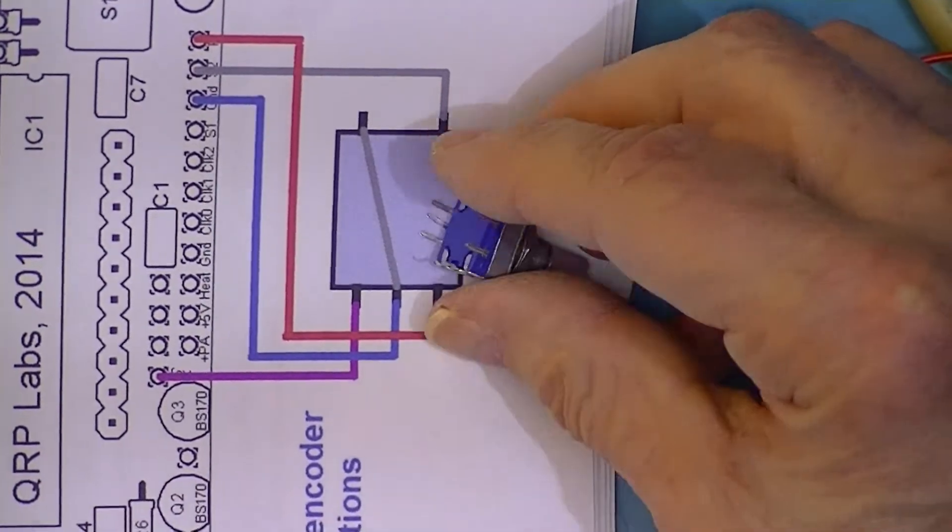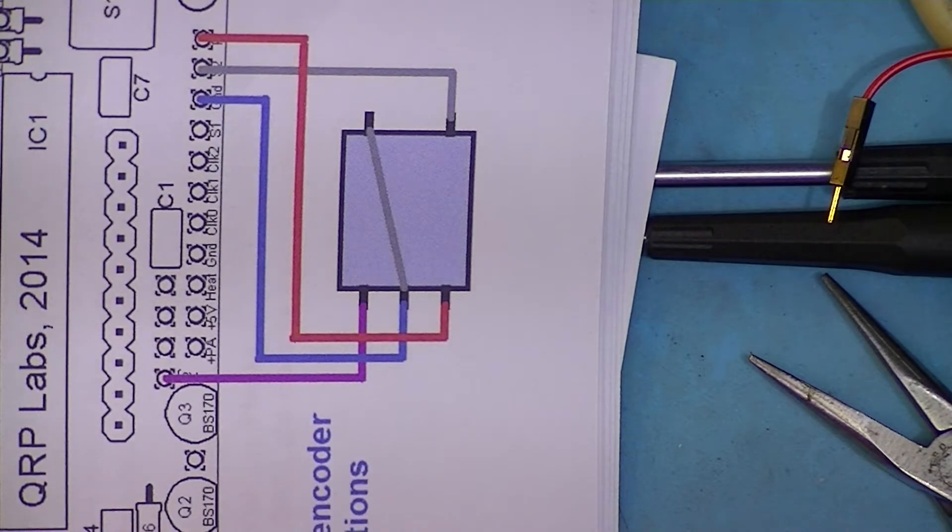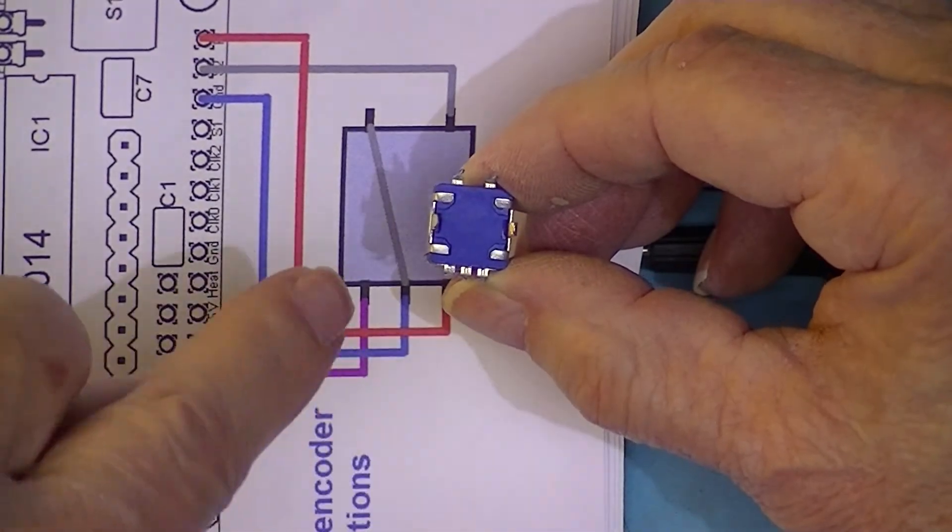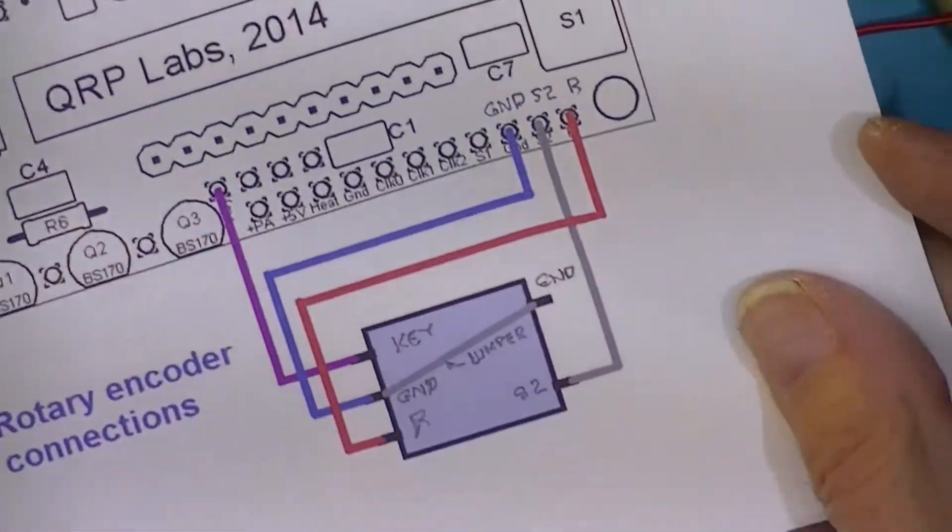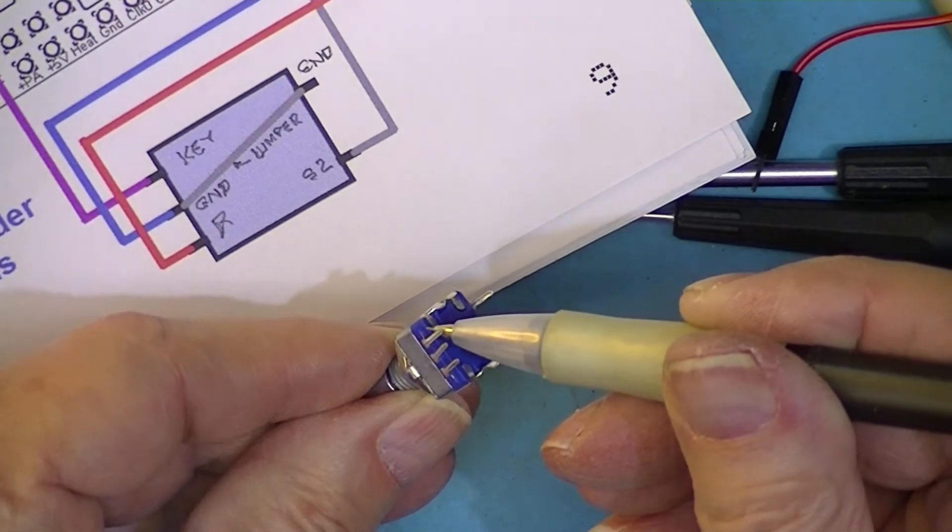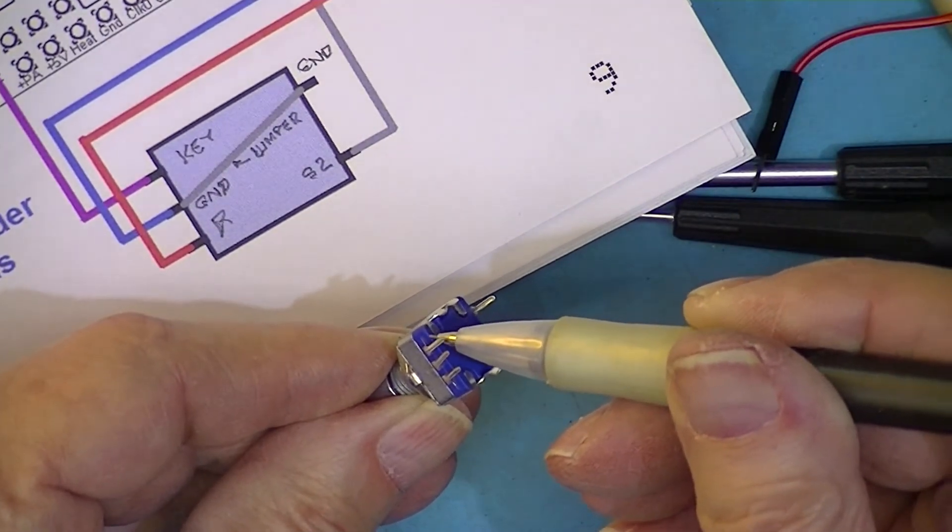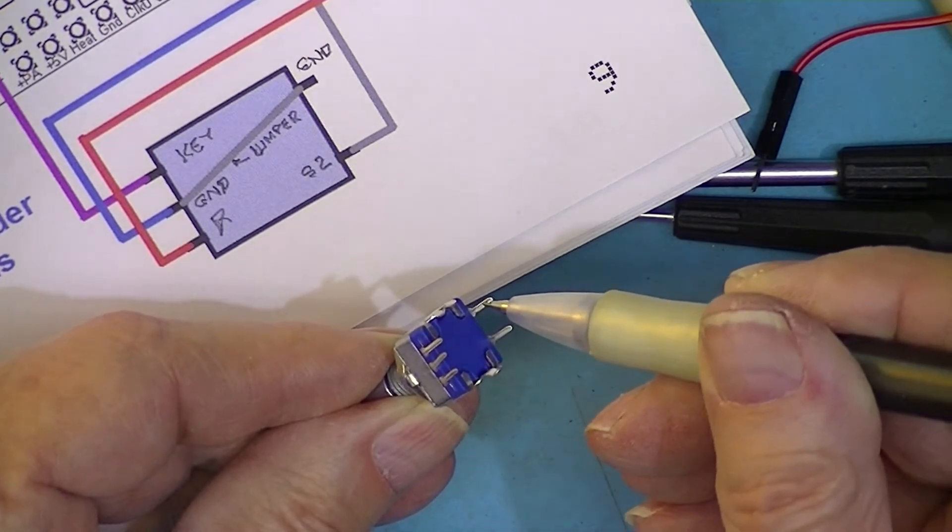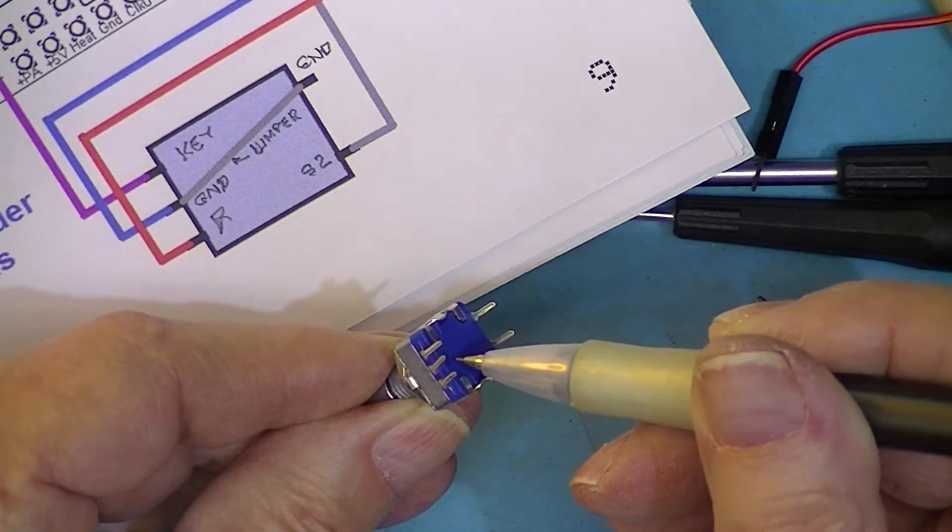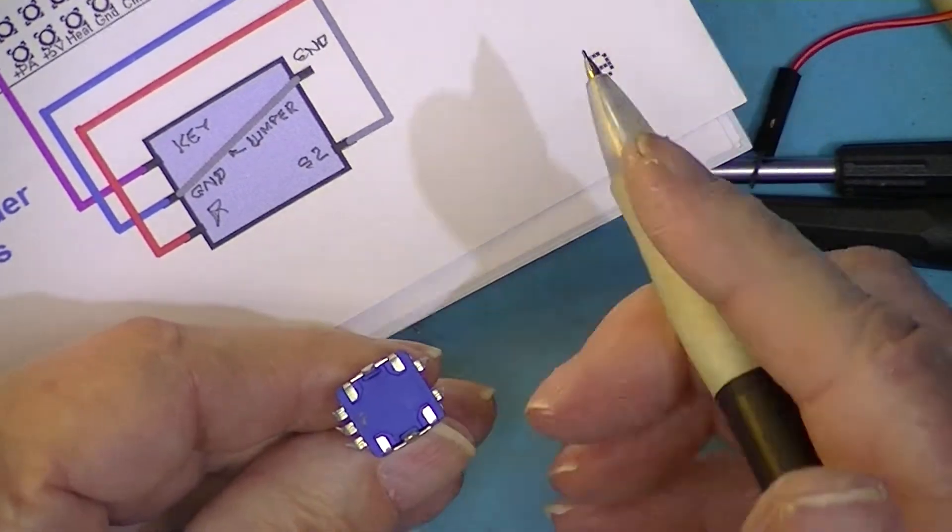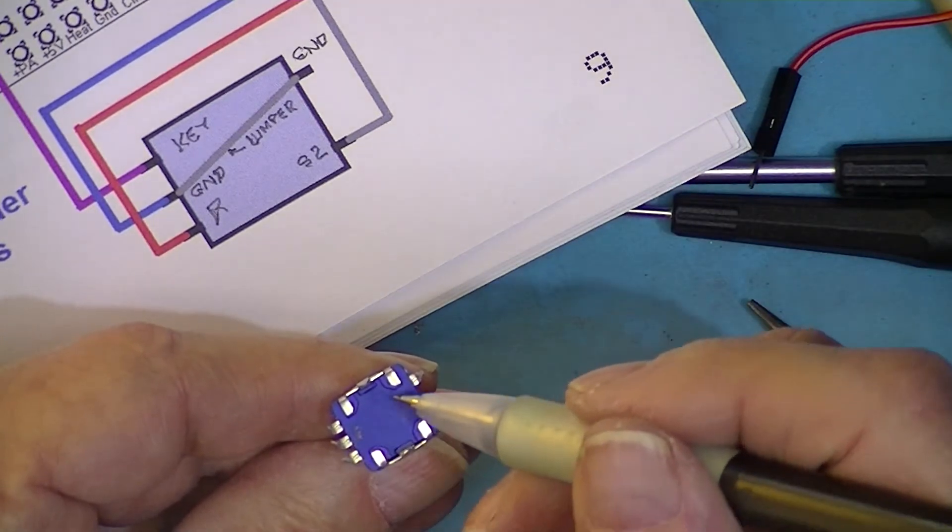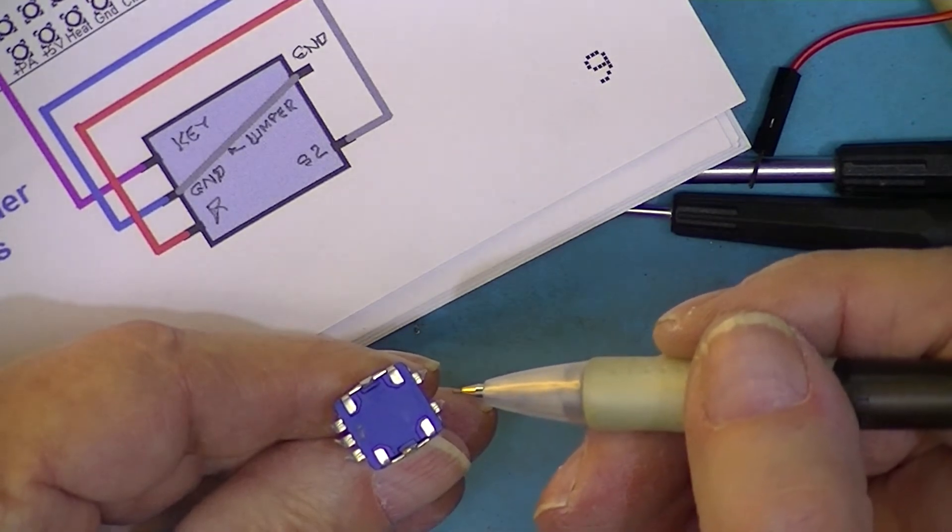The encoder is supposed to be wired like this: two pins on one side, three pins on the other. Looks like there's a jumper going across there. So to be clear, I've marked: this pin goes to the key, this pin and this pin go to ground, this pin goes to R. On the other side, we've picked the ground up here via this jumper, and this side goes to S2.